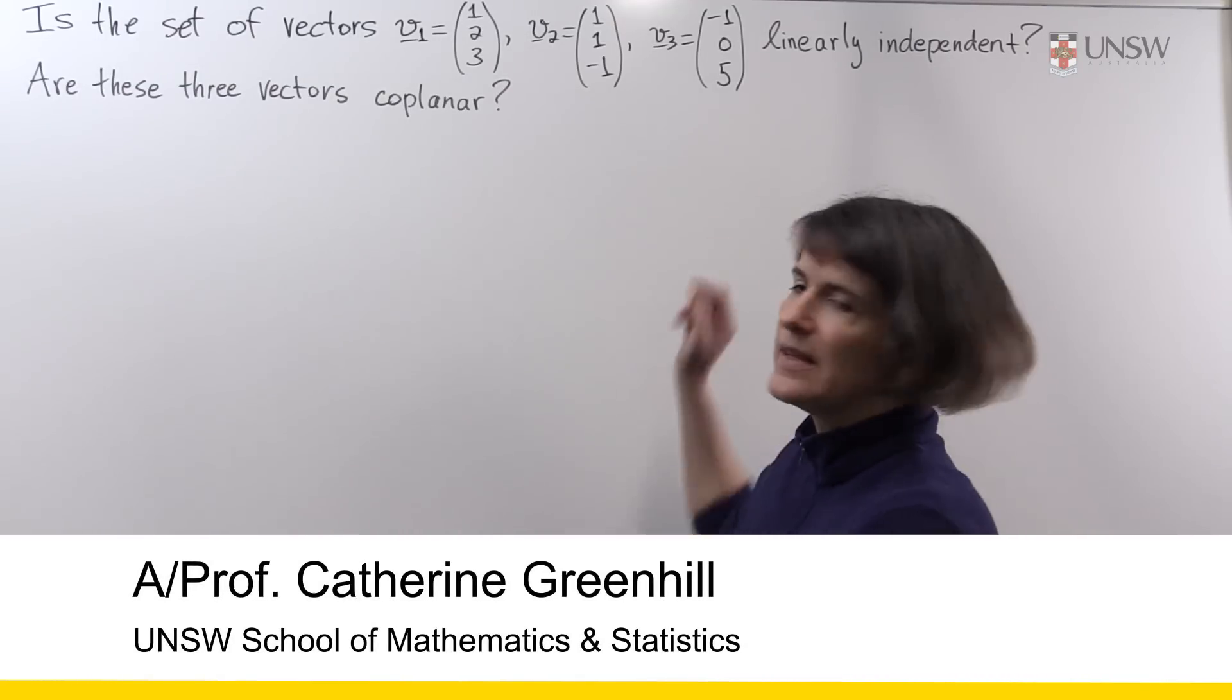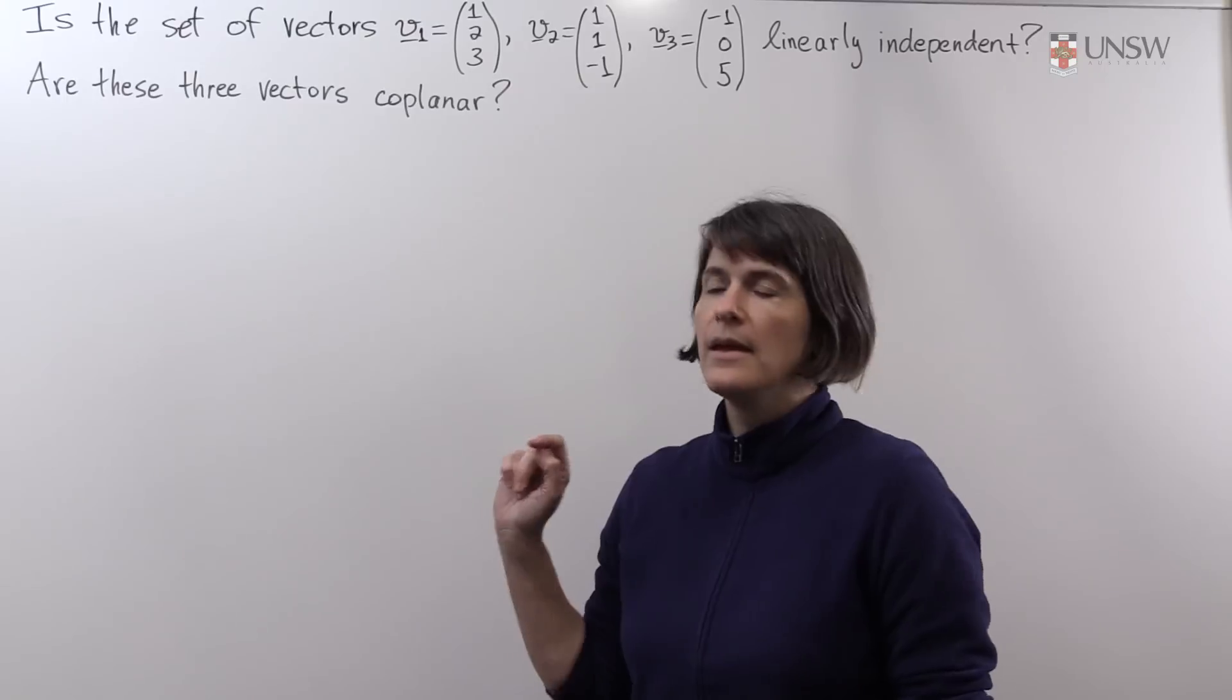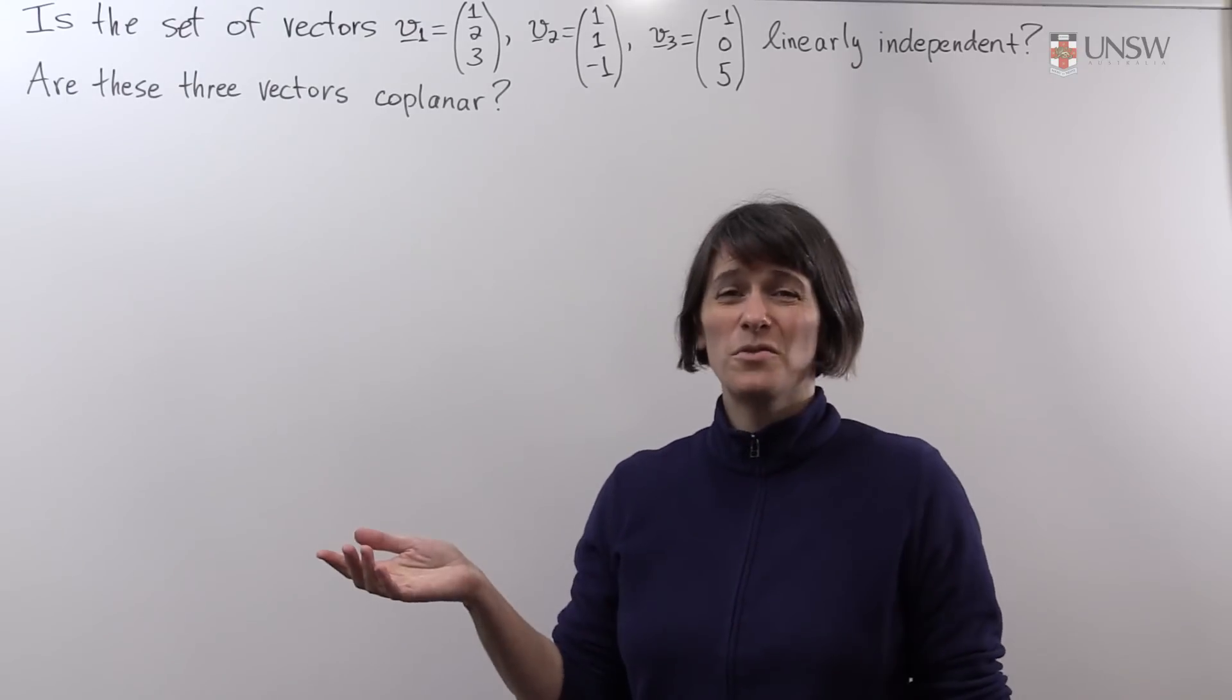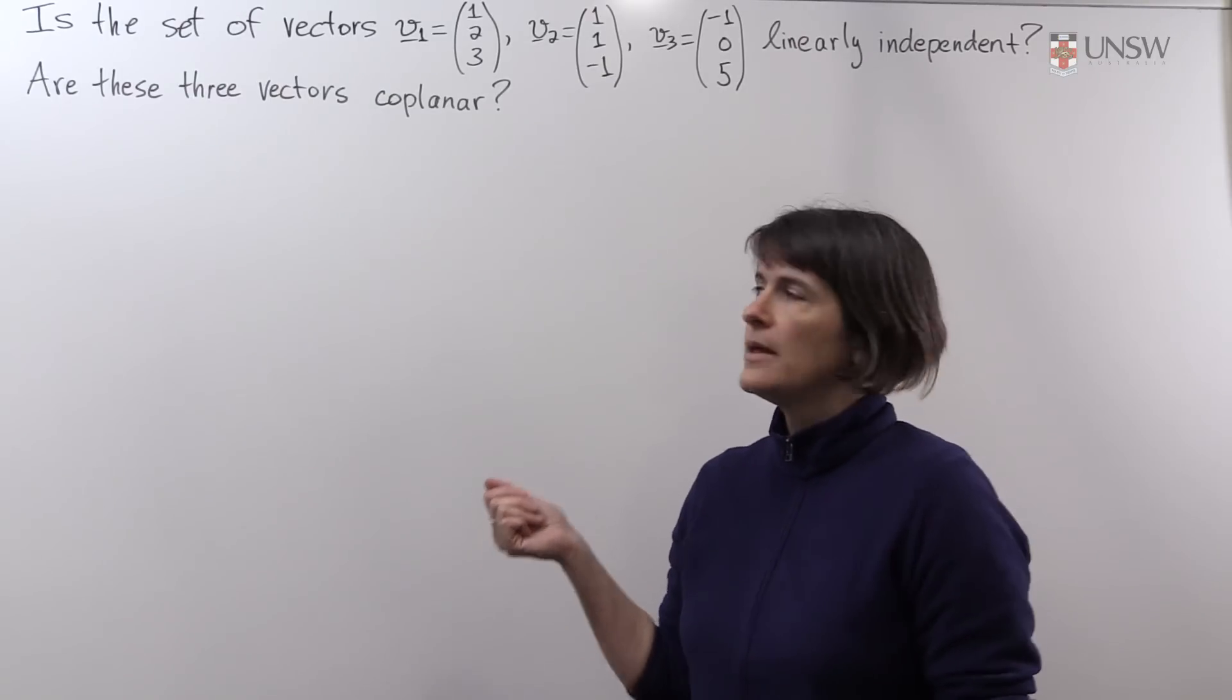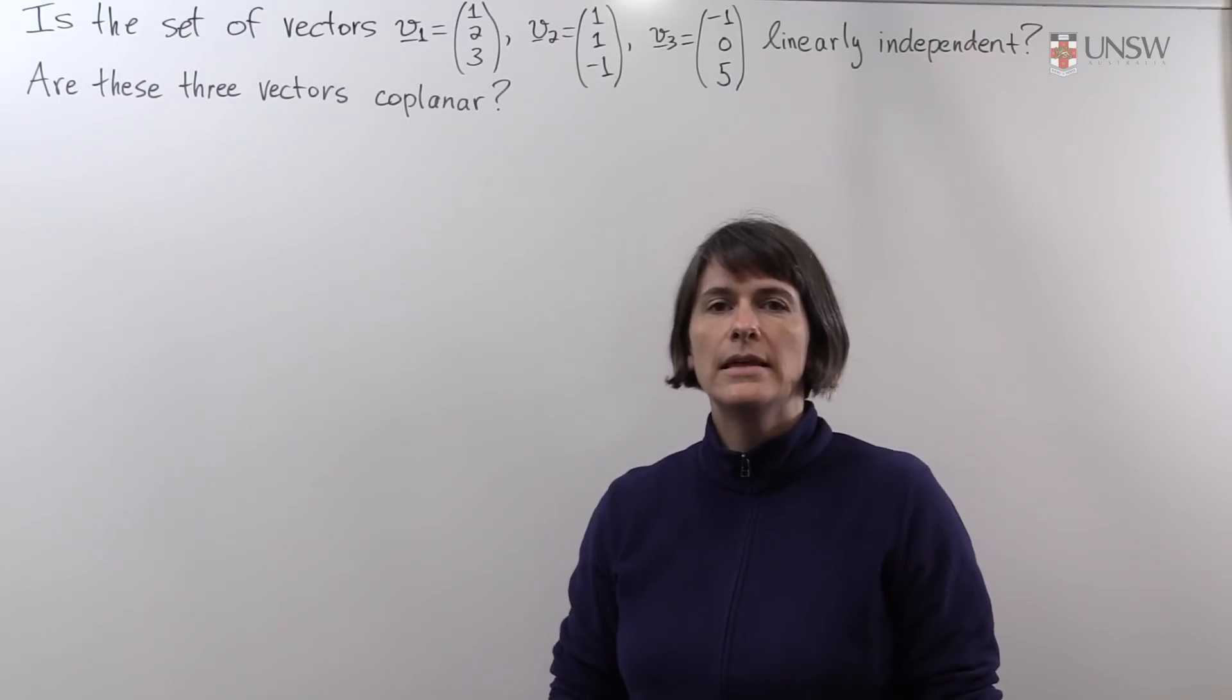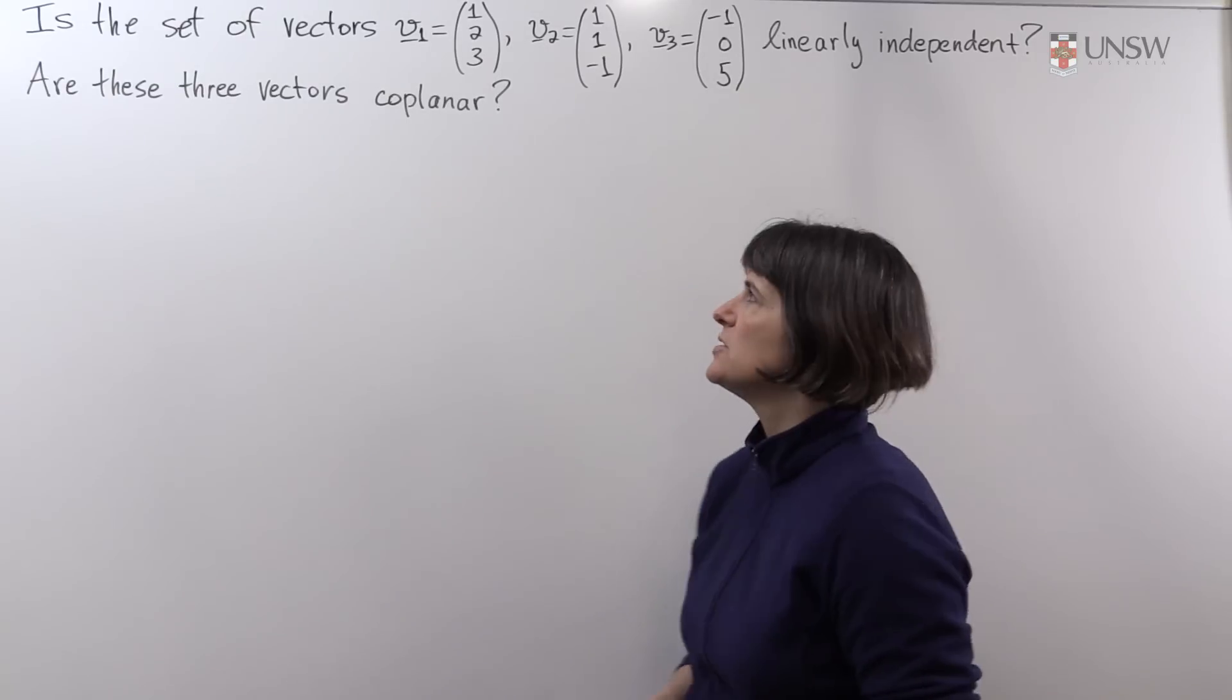Okay, so we're going to look at this question today. We're given three vectors, v1, v2 and v3 in R3. And we're asked what looks like two questions. Is the set of vectors linearly independent? Are these vectors coplanar? As we'll see, these are really two halves of the same question.